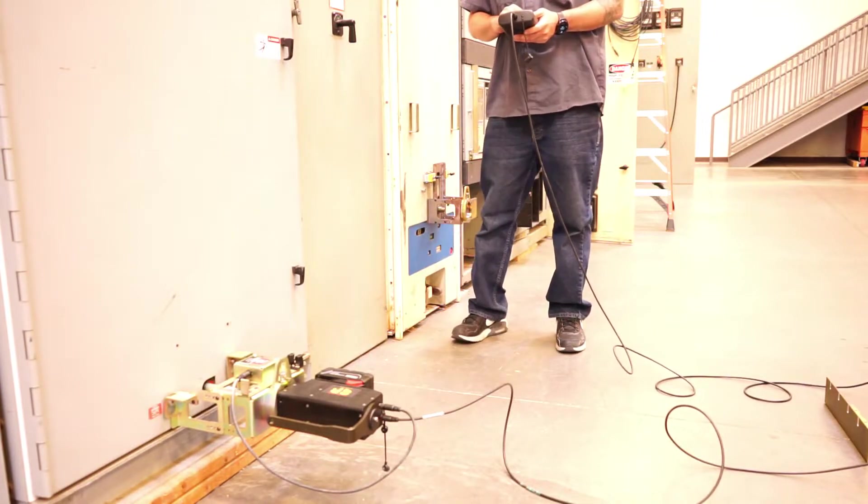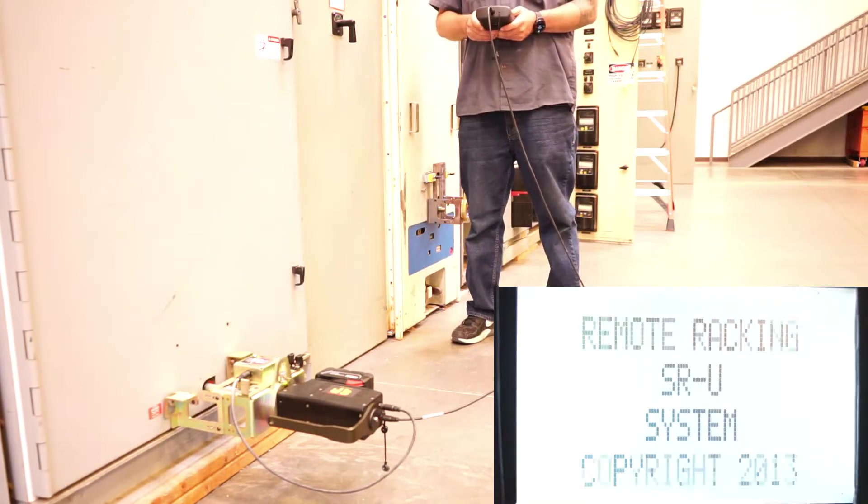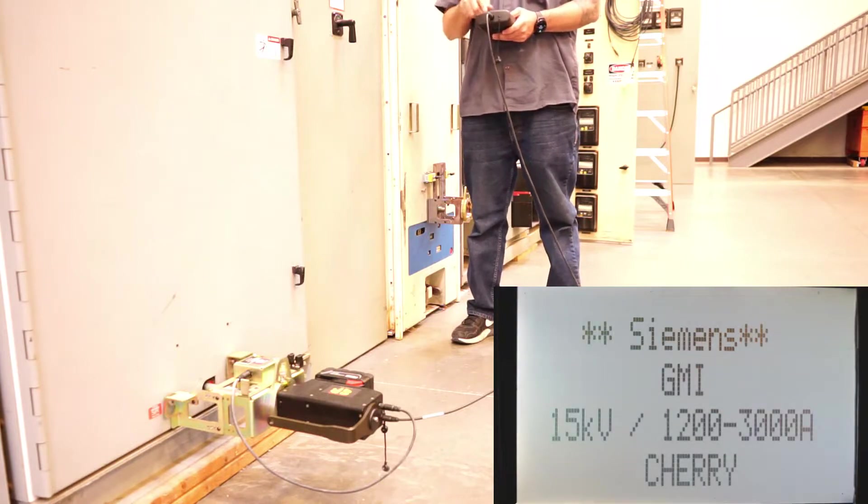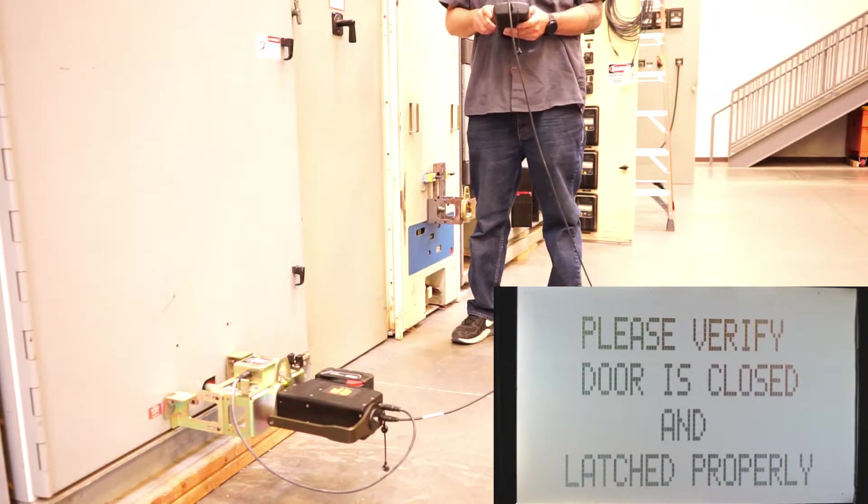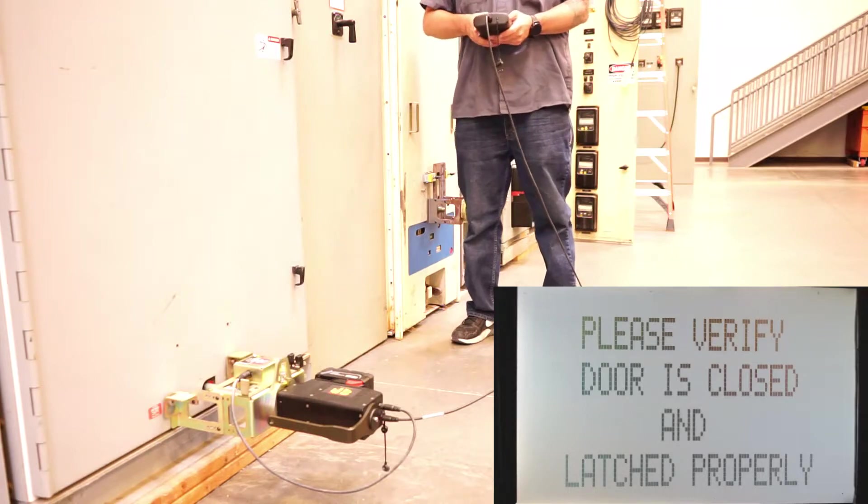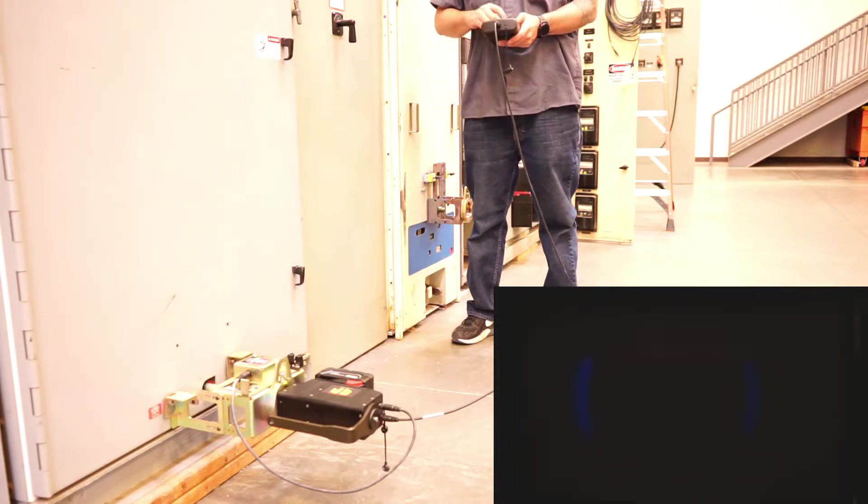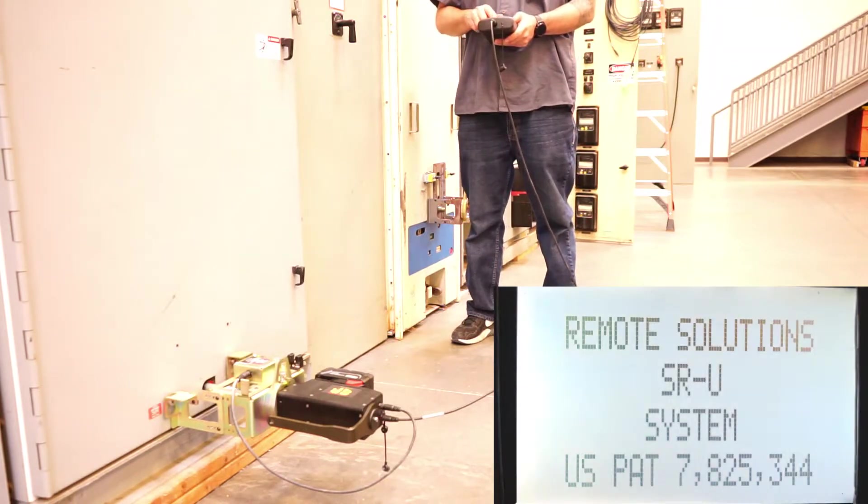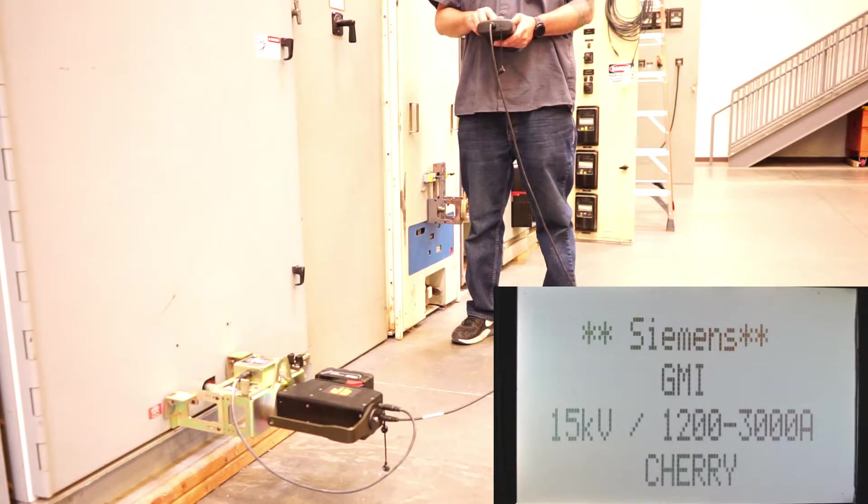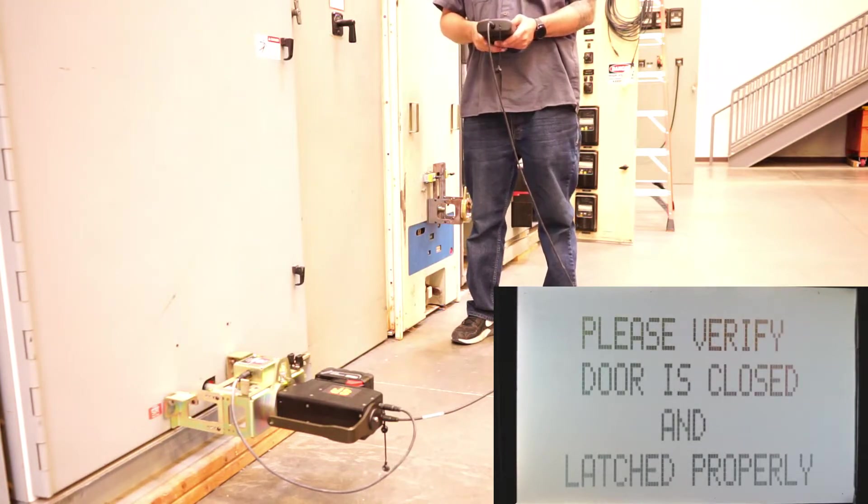Simply twist to turn on the unit. You'll notice a welcoming screen as well as the breaker type and color code on the screen. We'll show this again. Right there, you'll notice the breaker type as well as the color code.